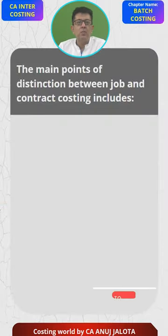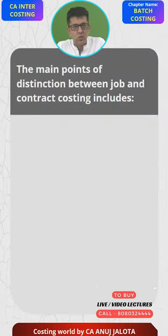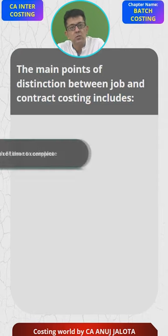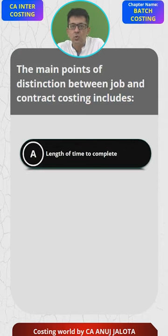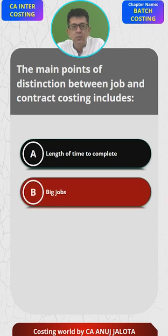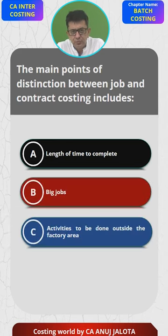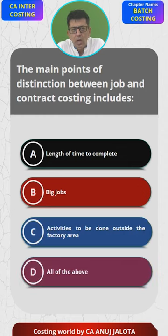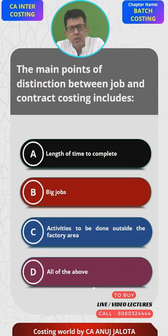The main point of distinction between job costing and contract costing includes — four options: A, length of time to complete; B, big jobs; C, activities to be done outside the factory area; and D, all of the above.